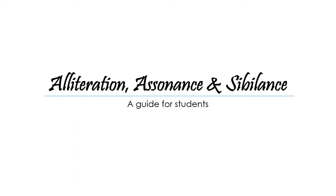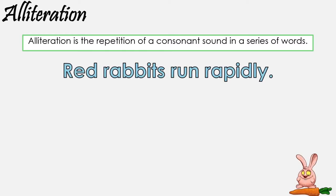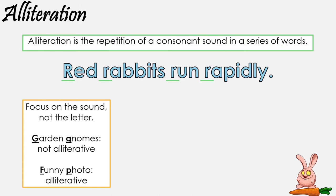Now all of these techniques are quite similar. They're all to do with the sound of the words that you are using, or that are being used in the text that you're looking at. First off, let's look at alliteration. Alliteration is simply the repetition of a consonant sound in a series of words. An example is 'red rabbits run rapidly.' Note it repeats the consonant sound R at the beginning of each word. Keep in mind that it's not to do with the letter, it's to do with the sound.